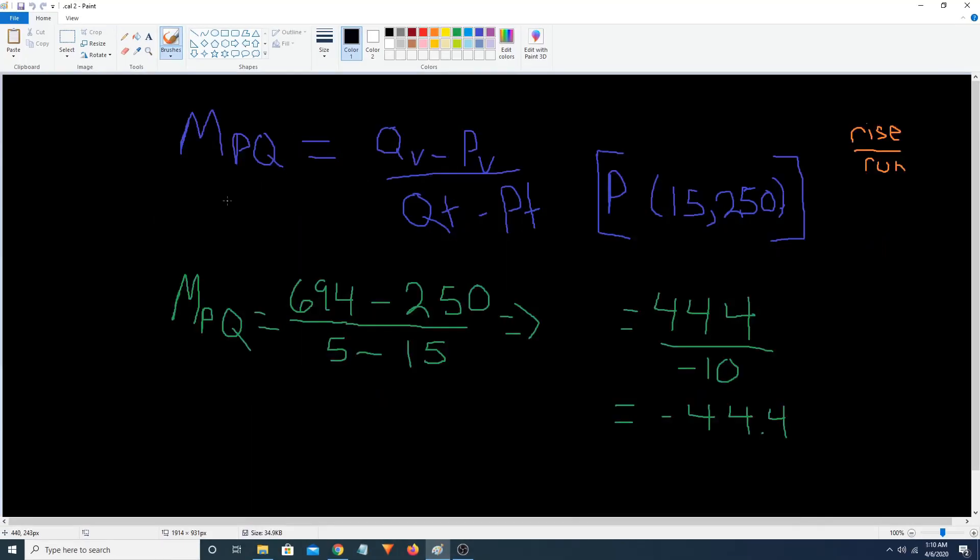In this example, we're going to be using this equation. If you're watching my other videos, you'll be familiar with this. This is the slope of a secant line. That's what we're trying to find.